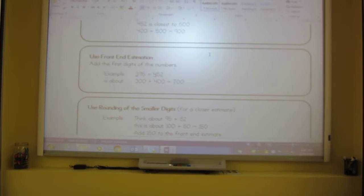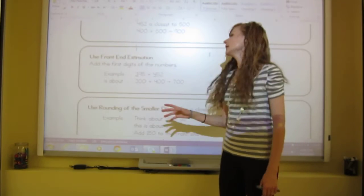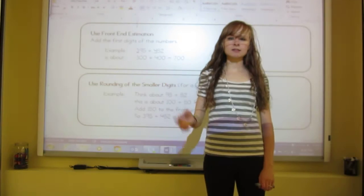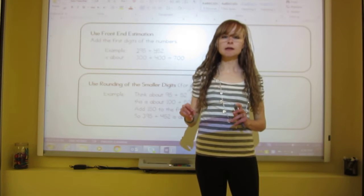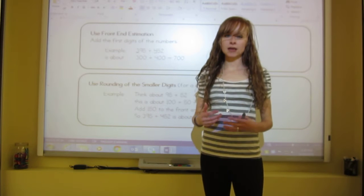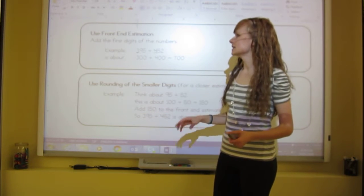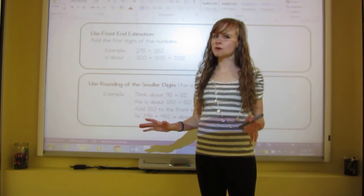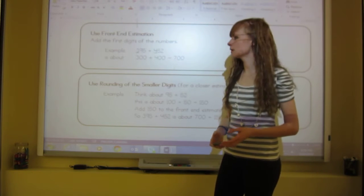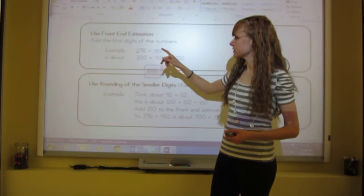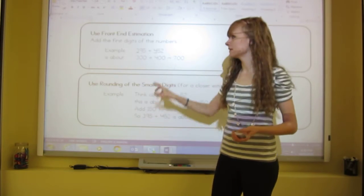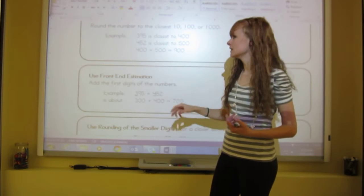The other ways of estimating are not as specific. Front-end estimating is where you look at the front digit of each number, ignore everything else, and just add those together. This gives a less specific answer, so it will be further from the real answer — I don't recommend using it unless you don't need much precision. For example, with 395 plus 452: the three becomes 300 and the four becomes 400, giving 700. Notice that's quite different from the 900 estimate above — 200 off — so rounding is better.